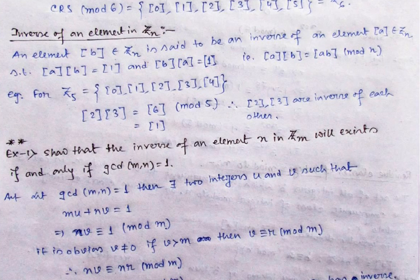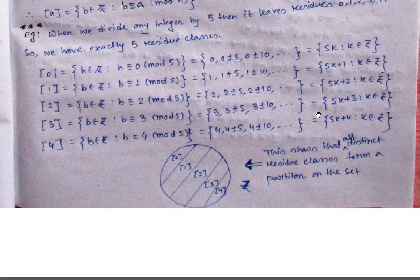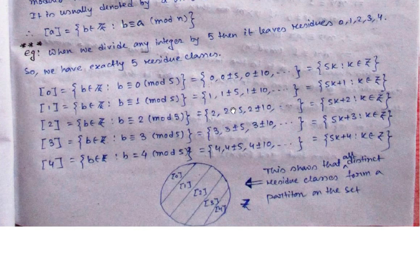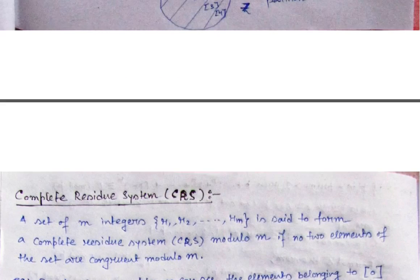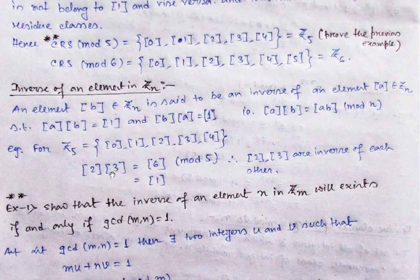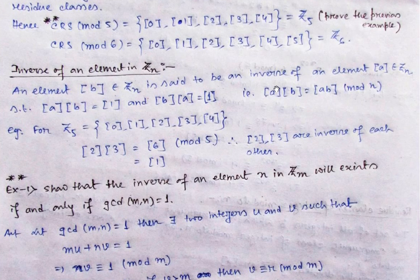6 gives remainder 1 under mod 5, so 6 is in class 1-bar. Let's verify with other elements: take 7 from class 2-bar (since 2 + 5 = 7) and 8 from class 3-bar (since 3 + 5 = 8). Multiply 7 times 8 = 56. Divide 56 by 5: 11 times 5 = 55, so remainder is 1. So multiplying any elements from class 2 and class 3 always gives remainder 1 — that means whenever you multiply these two classes, the result is class 1.